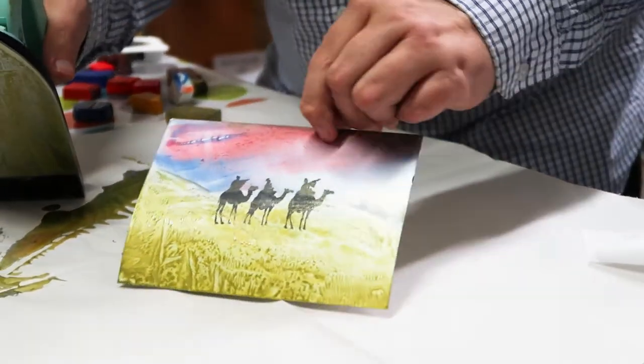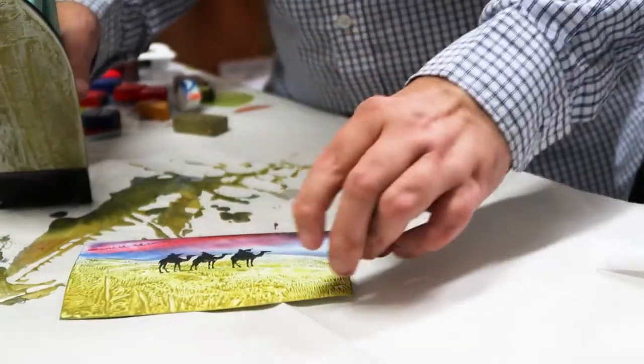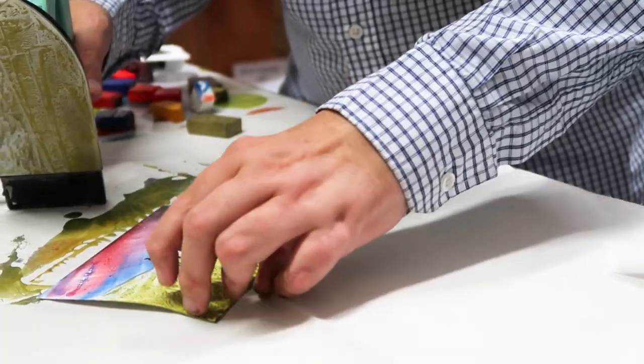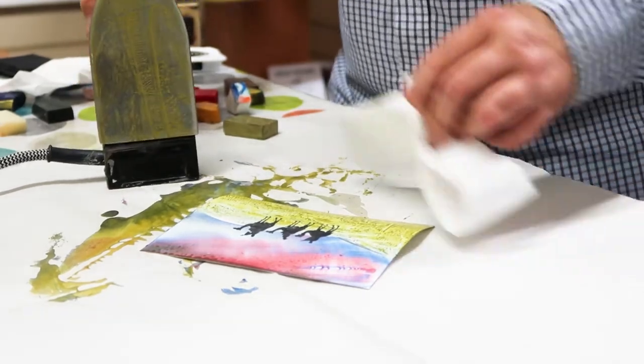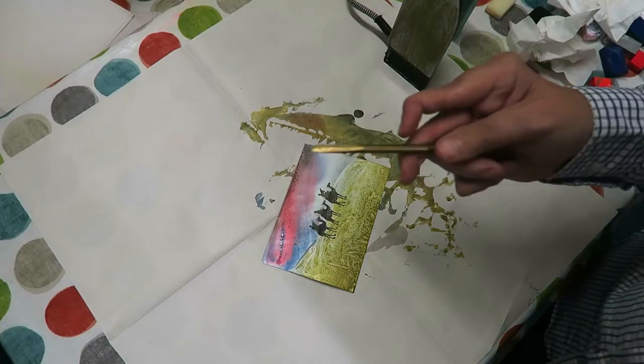They're all obviously pointing towards a star. You can take your scrapey tool which you'll find in the starter kit, which is like a metal pencil. You can use this to scrape in the appearance of a star.